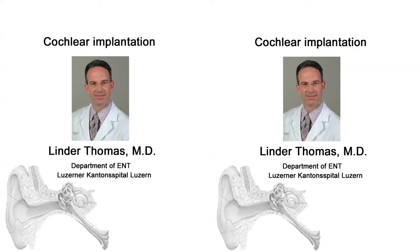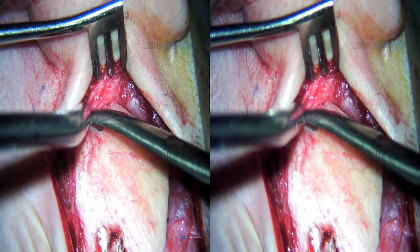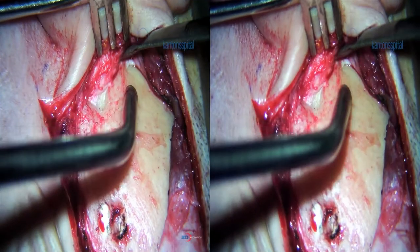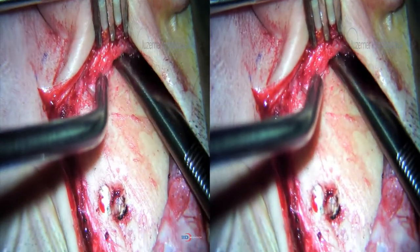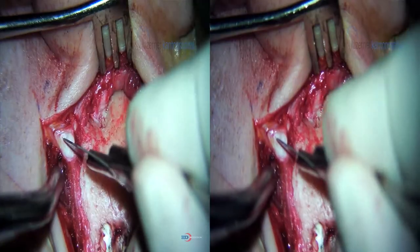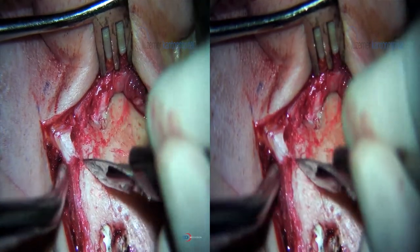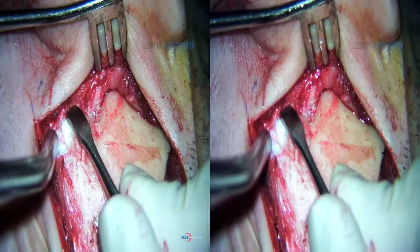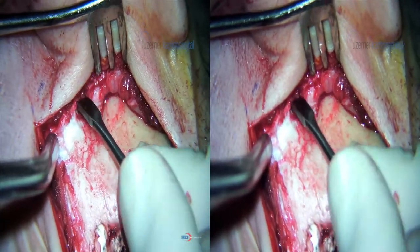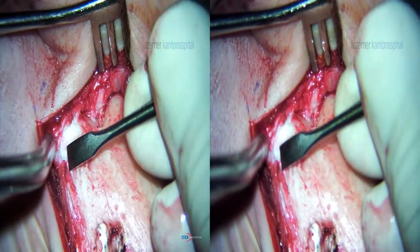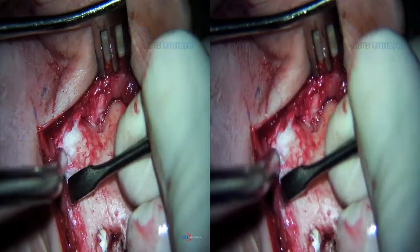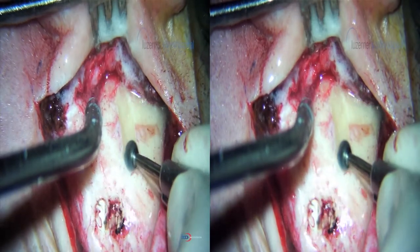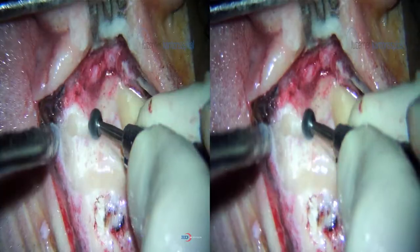We present a short video on a left ear cochlear implantation. An L-shaped incision has been made as well as a periosteal muscular flap. The mastoid is exposed widely.